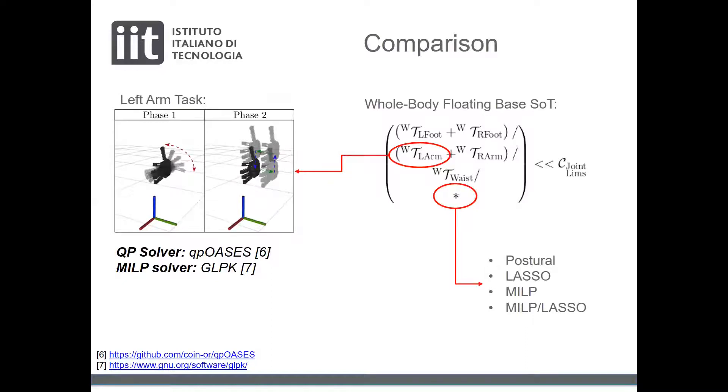For the left arm, we command a Cartesian motion where first the hand has to perform a pure rotation. Consequently, the same hand has to move on a square. These motions have to be performed according to the specified priorities.